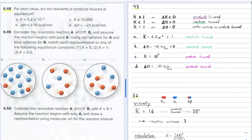The equilibrium constants tell you whether the reactants or products are favored. If the equilibrium constant is greater than one, the products are favored — the reaction forms more products when it's finished. If the equilibrium constant is less than one, the reactants are favored. If it equals one, neither reactants nor products are favored; you'll have roughly equal amounts.